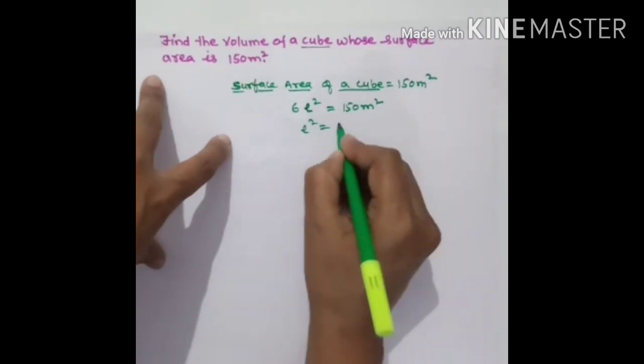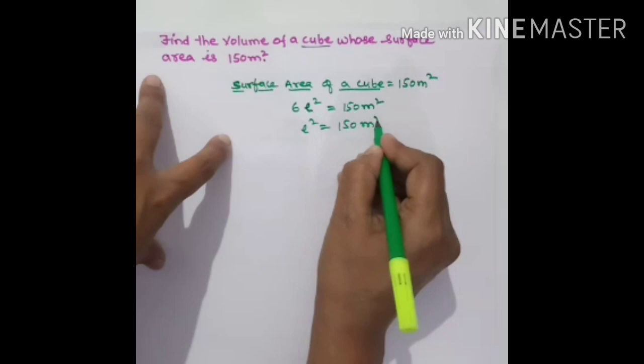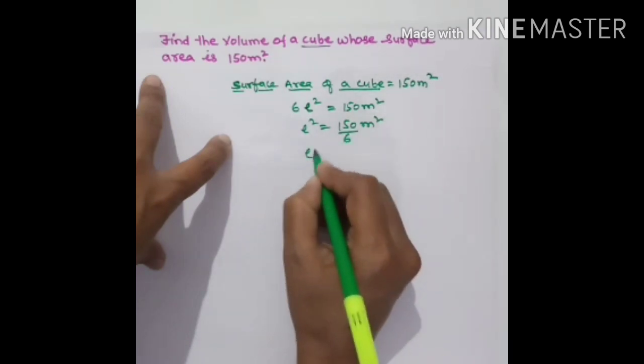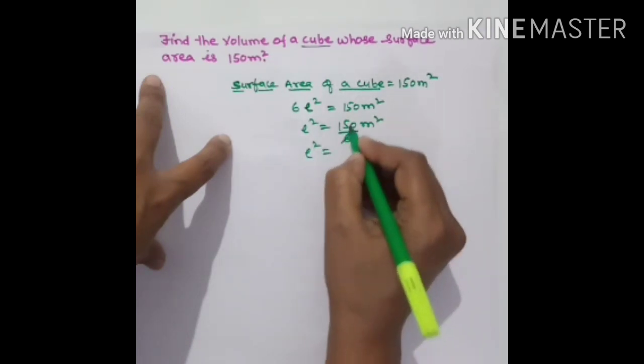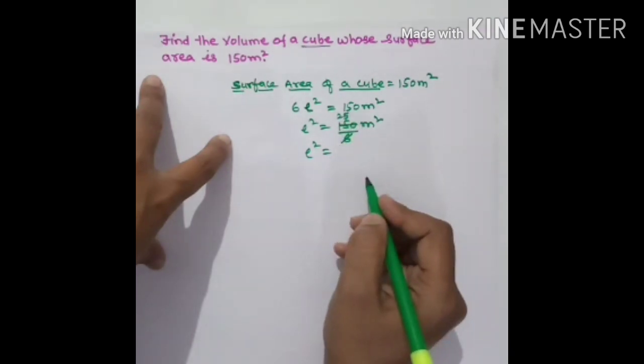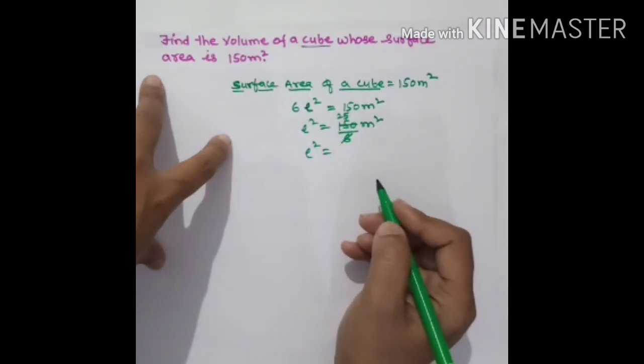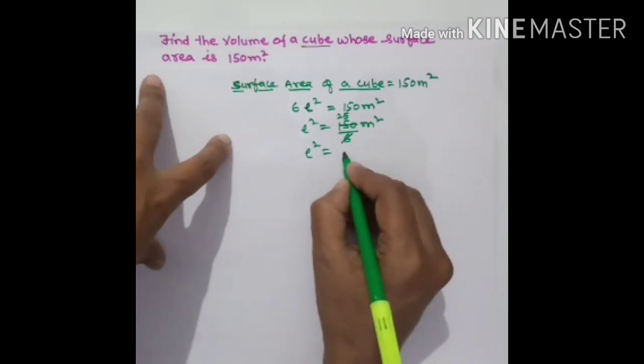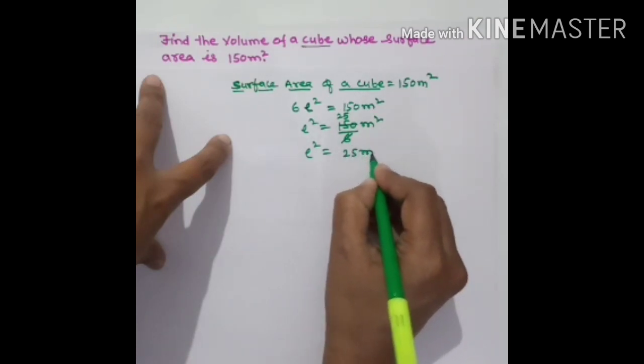L² will equal 150 meter square divided by 6. If you cancel 6 with 150, you will get 25. So L² is 25 meter square.